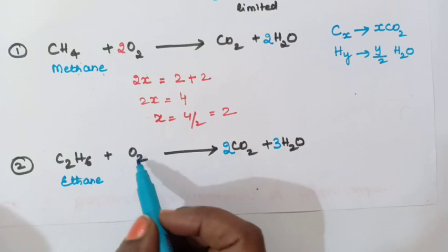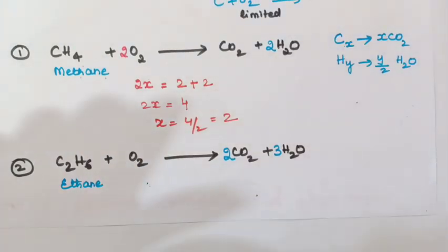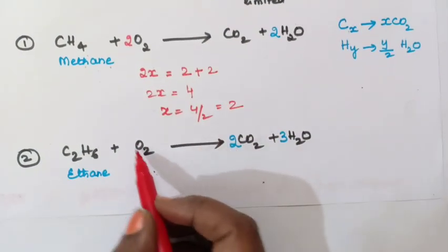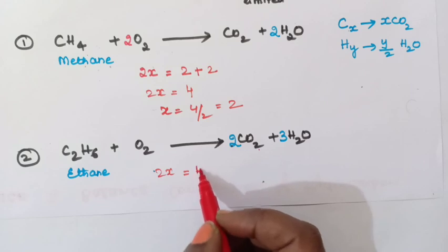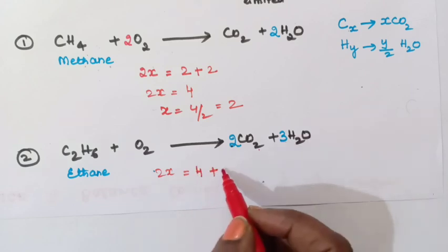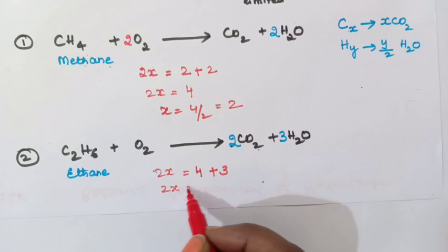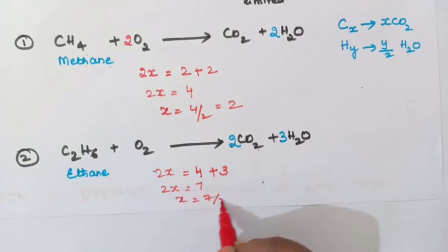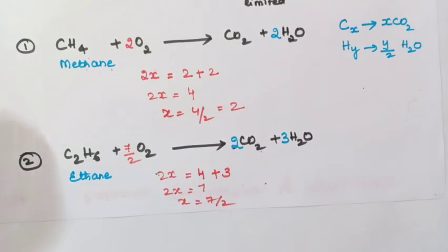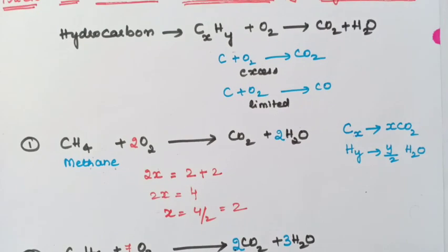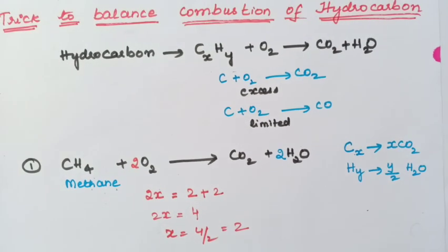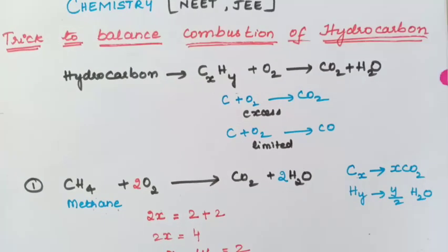Now for oxygen, take the reactant oxygen as 2X. Set 2X equal to the total oxygen on the product side: 2 times 2 gives 4 oxygens from CO2, plus 3 from H2O, so 2X equals 7. Therefore oxygen will be 7/2. This is how we balance combustion of hydrocarbon reactions. If you found this easy, write your comment in the comment box. If you have any doubts, you can also write. See you in the next video — bye-bye.